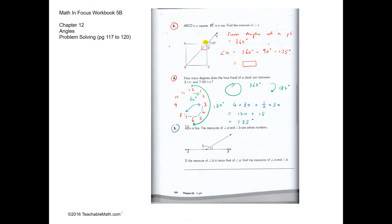Question 5. AB is a line. The measures of A and B are whole numbers and B is twice the measure of A. Angle A is 1 unit and angle B is 2 units, so together 3 units equals 180 degrees. Therefore one unit equals 60 degrees, so A equals 60 degrees and B equals 120 degrees.